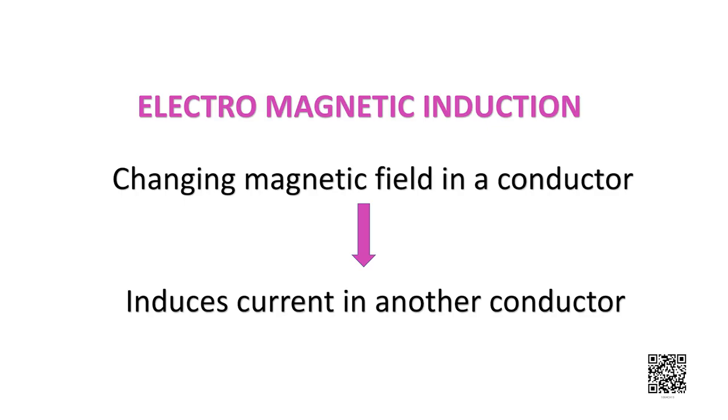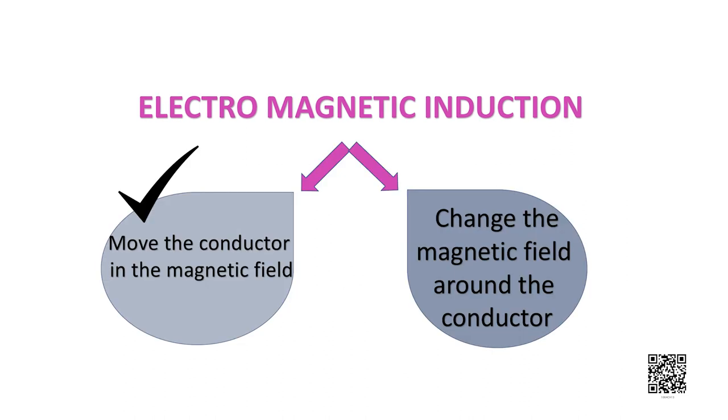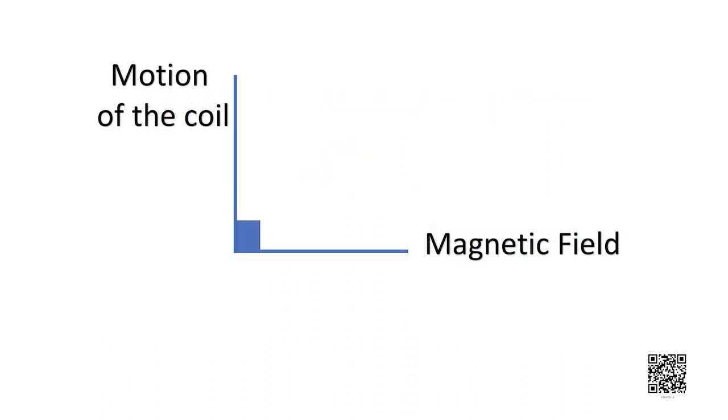This process by which a changing magnetic field in a conductor induces a current in another conductor is called electromagnetic induction. In practice we can induce current in a coil either by moving a magnet in the magnetic field or by changing the magnetic field around it. It is convenient in most situations to move the coil in a magnetic field. The induced current is found to be the highest when the direction of motion of the coil is at right angles to the magnetic field.